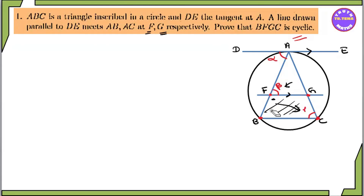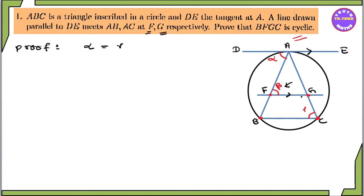This is the proof. Alpha and gamma are the same. Alpha is equal to gamma. This is the same. The gradient is equal to alpha.